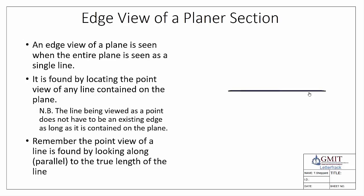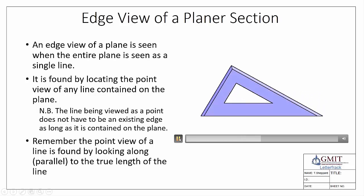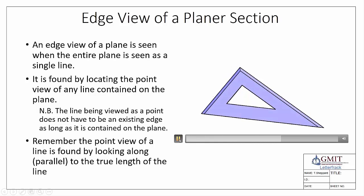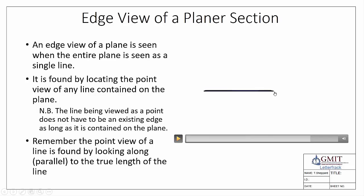To locate the point view of a line, we first must find the true length of the line, and then we look parallel to or along the line. So if we take any edge — say this edge here — at the moment we have a true length of it. If we look along or parallel with it, we should see the entire plane as an edge view. We'll see a point view of the line and an edge view of the plane, and there we can see exactly that.